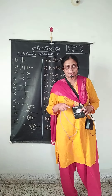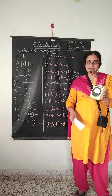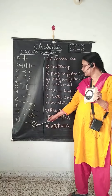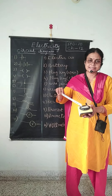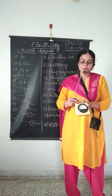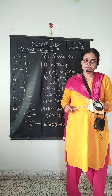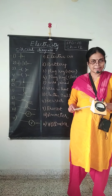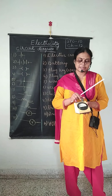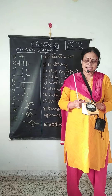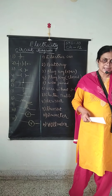The next apparatus is the voltmeter. The voltmeter looks like this, and inside you can see the letter V is written. Ammeter has the letter A written inside. The voltmeter is used to measure the potential difference, and the ammeter is used to measure the current. Here also, the red terminal is positive and the black is negative. The connecting wire will be connected with this, and the other end of the wire will be connected with the other apparatus.